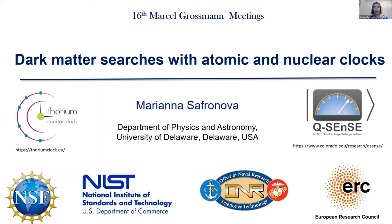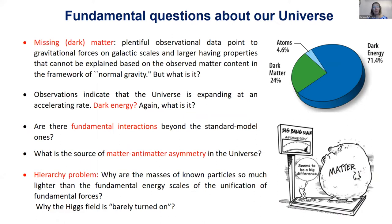The second speaker introduces her talk on dark matter searches with atomic and nuclear clocks. She summarizes key open problems: missing matter (dark matter), the accelerating expansion of the universe (dark energy), likely missing energies and interactions beyond the standard model, the unknown source of matter-antimatter asymmetry, and the hierarchy problem — why the Higgs field mass is so much lighter than fundamental energy scales at unification.